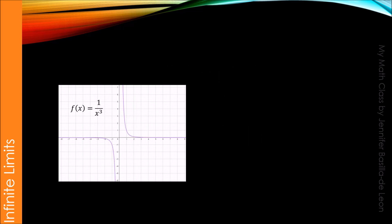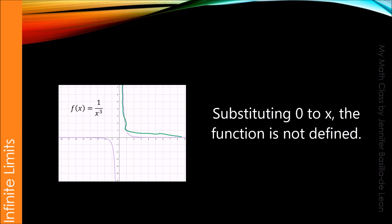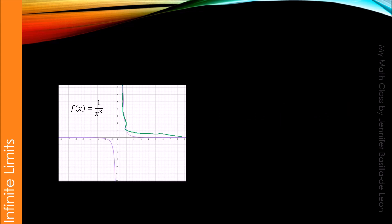Let's try to evaluate the limit of 1 over x cubed as x approaches 0 from the right. Looking at the graph of the function 1 over x cubed, as x approaches 0 from the right, the graph increases without bound. The graph will not cross the y-axis because when we substitute 0 for x, the function is not defined. It will just get closer to the y-axis as we choose a value closer to 0 from the right. So we say that the limit of 1 over x cubed as x approaches 0 from the right is positive infinity.